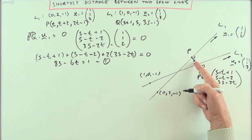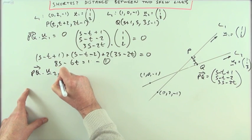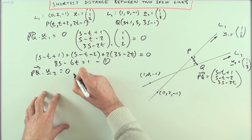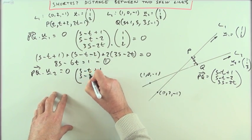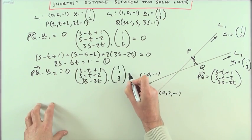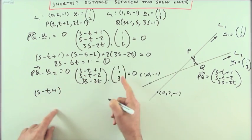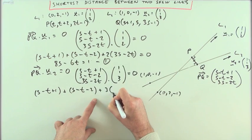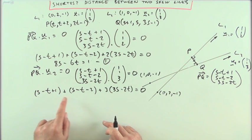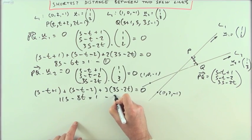The same vector PQ must also be perpendicular to line two, so PQ dot U2 must also equal zero. Computing the scalar product of (S-T+1, S-T-2, 3S-2T) with U2 = (1, 1, 3): that gives (S-T+1) + (S-T-2) + 3(3S-2T) = 0. Expanding: 1 + 2 + 9 = 11 lots of S, minus 1 + 2 + 6 = 8 lots of T, and the constants give -1, so taking it over: 11S - 8T = 1. That's the second equation.